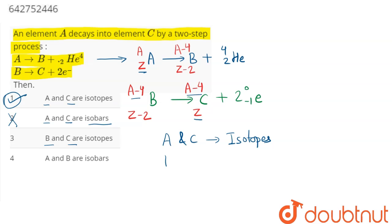So B and C have same mass numbers, B and C must be isobars but not isotopes as in option number 3. So option 3 is incorrect.